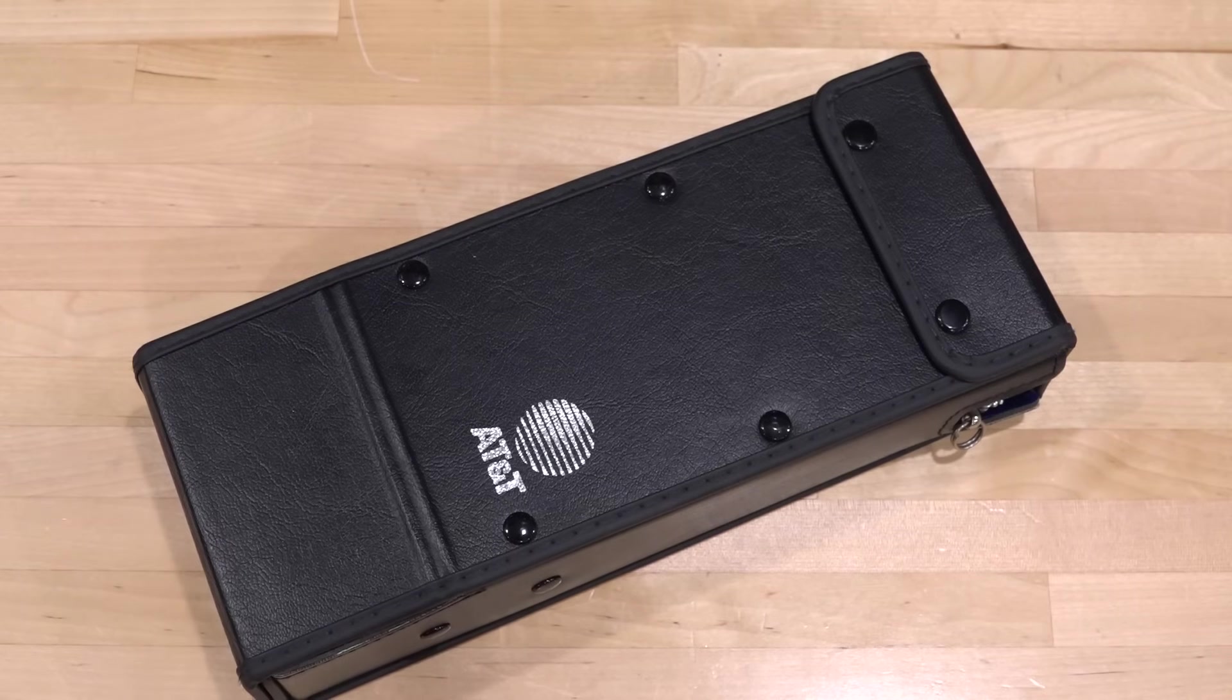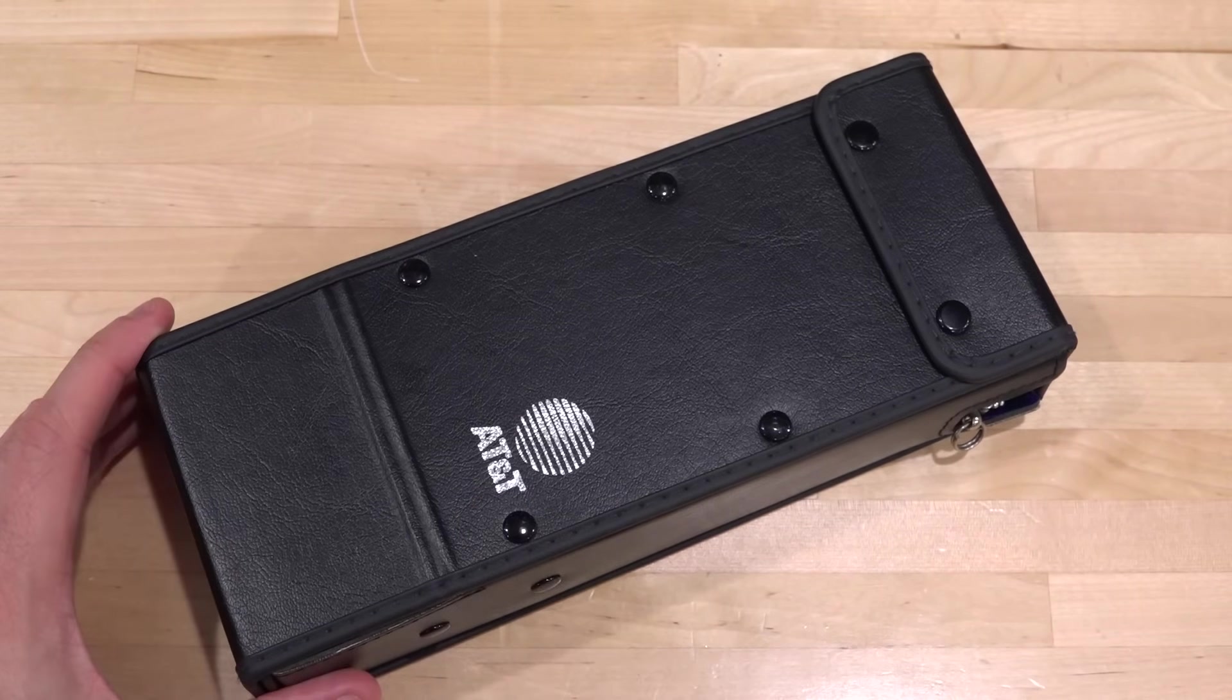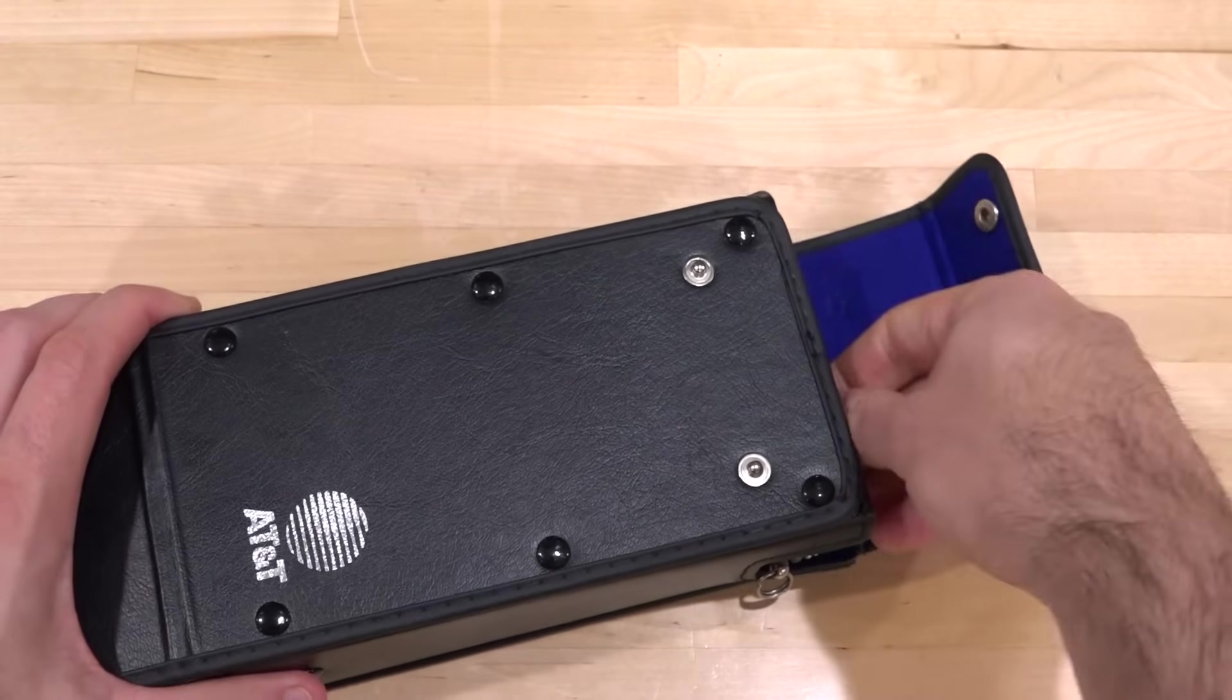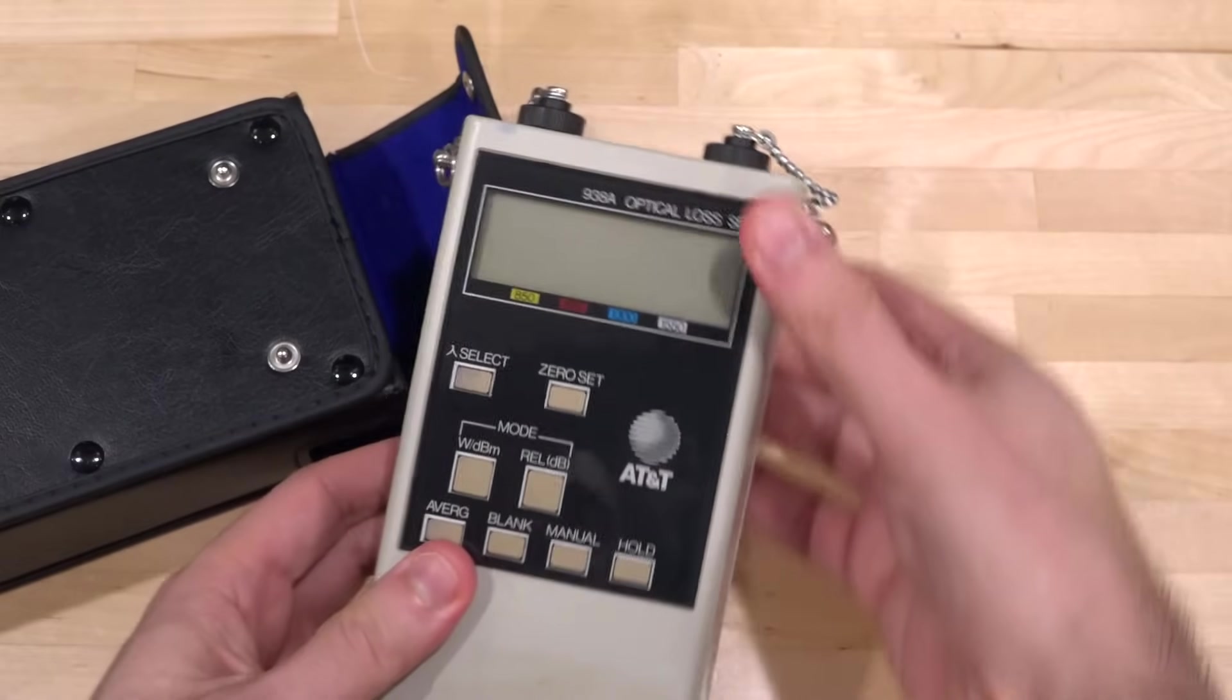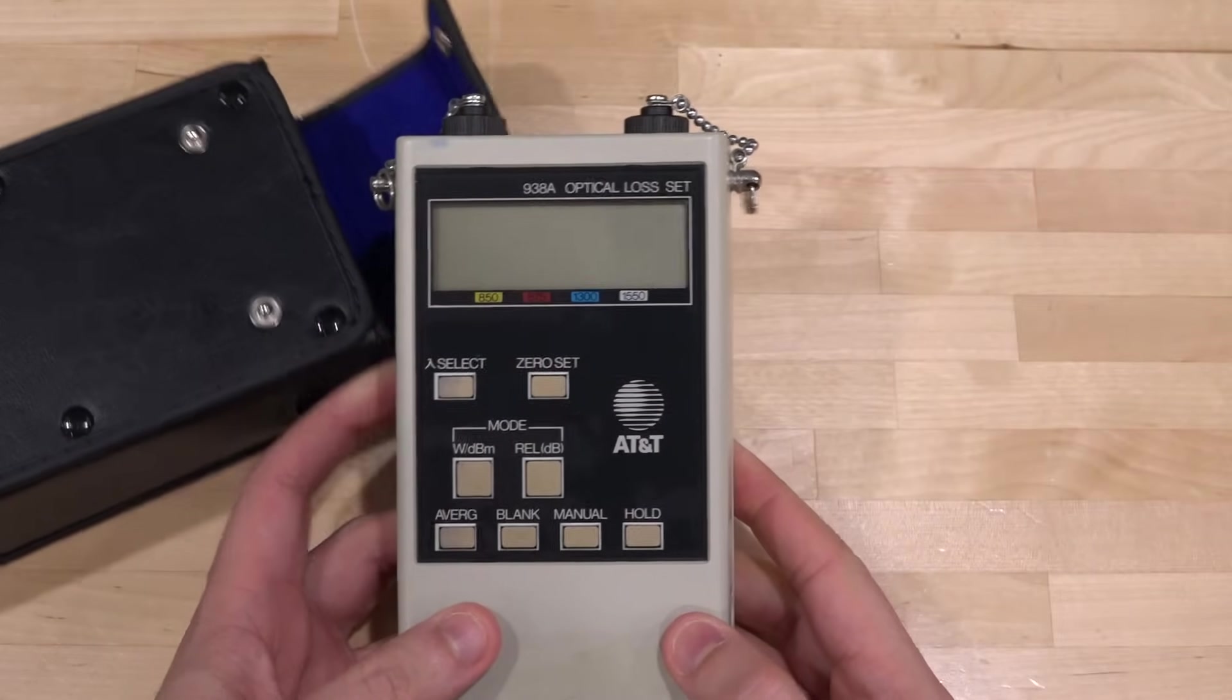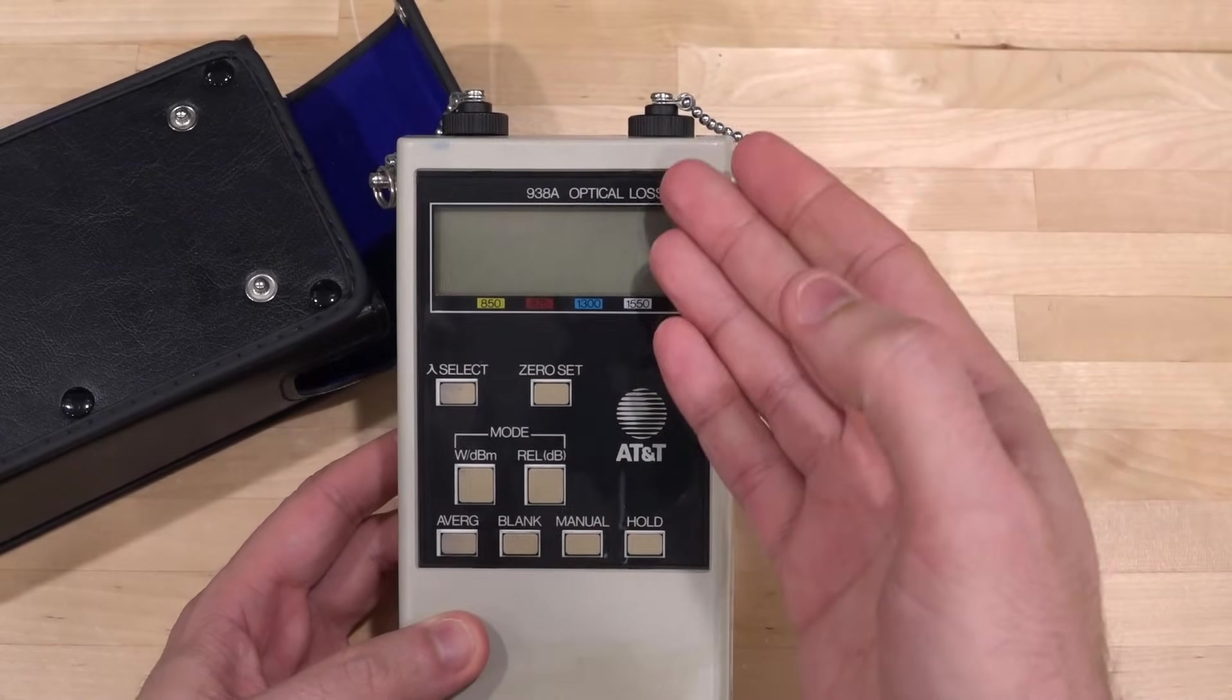Hi, welcome to The Noisepath. I have a dumpster find item that I thought would be interesting for us to take a look at, an unusually AT&T branded item. If I take it out of the box, you will see that it is an optical loss set meter.